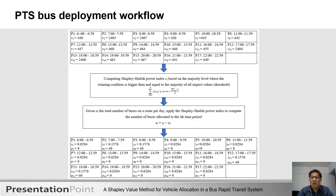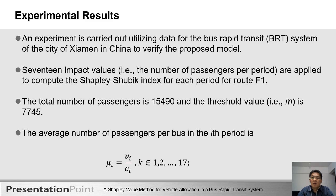As you can see, this workflow chart gives the impact value for the 17 time periods from V1 to V17. For bus route F1, we can compute the majority core impact value. The operating gain model is applied to establish a BRT bus deployment schedule using the Shapley-Shubik power index from S1 to S17. Finally, the proposed model produces a fair schedule of BRT buses and allocates the number of buses for the 17 time periods from E1 to E17 for the F1 route.